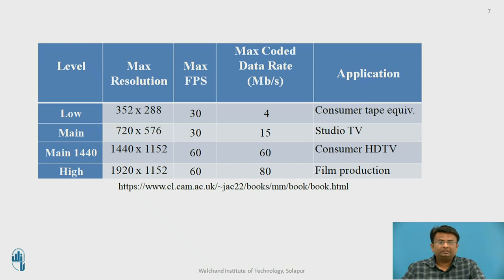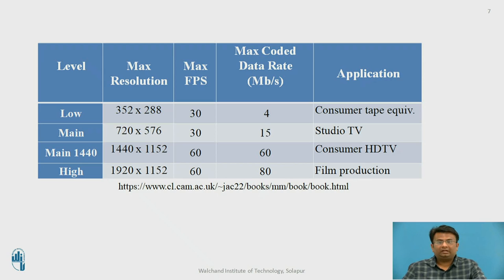The main-1440 level has a resolution of 1440×1152, supports 60 frames per second and a 60 Mbps data rate, and is used for high-definition television. The high level supports full HD resolution of 1920×1152 with 60 frames per second and a data rate of 80 Mbps, and it is used for film production.